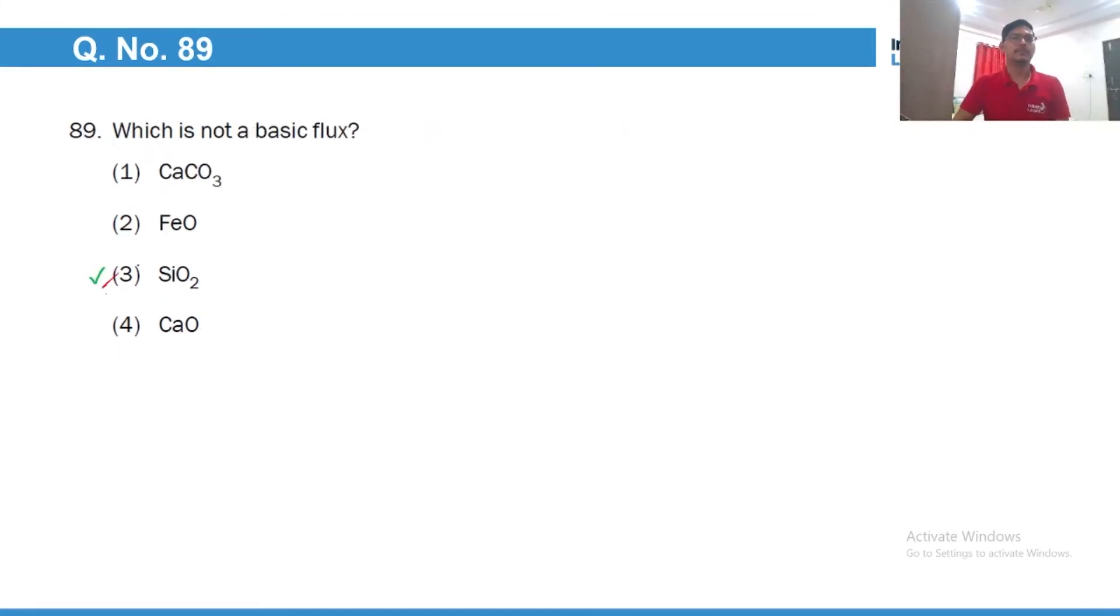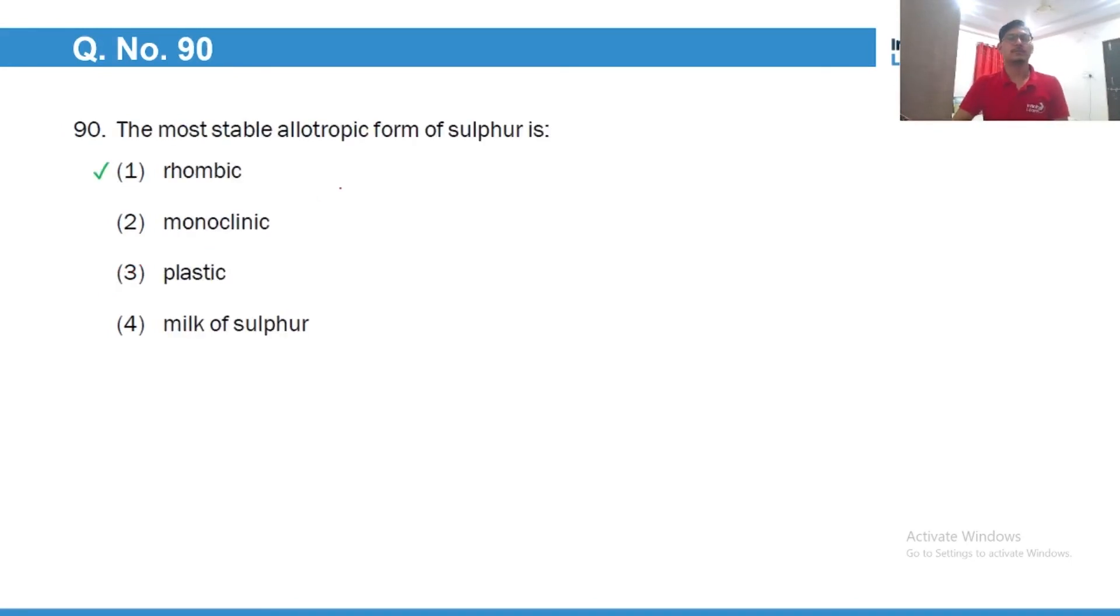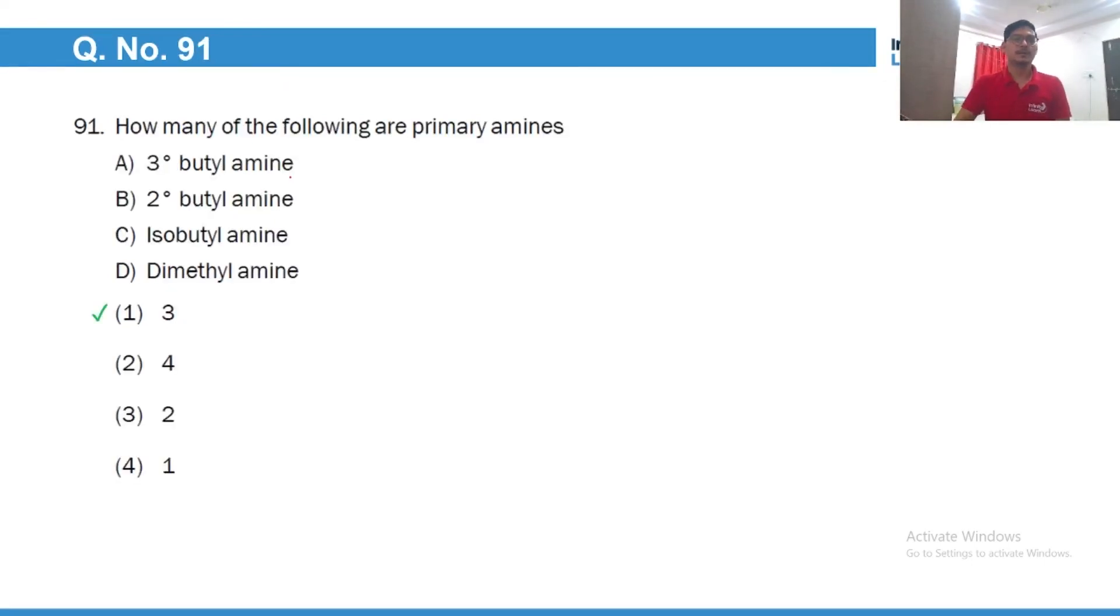Silica is not a basic flux, of course it is an acidic flux. Most stable allotropic form of sulfur is of course rhombic, mainly rhombic sulfur monoclinic sulfur below 369 Kelvin. Of course at room temperature rhombic sulfur is more stable. Tertiary butylamine, so it would be this. So of course this is primary amine. Secondary butylamine, so of course this is also primary amine. Isobutylamine, again this is primary amine, but dimethylamine is secondary amine. So there are three primary amines here.